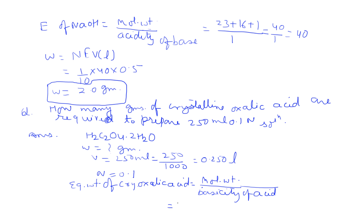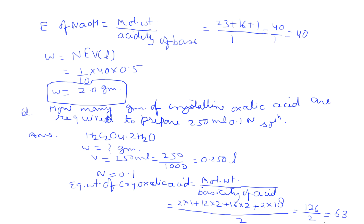Molecular weight of crystalline oxalic acid: (2×1) + (12×2) + (16×4) + (2×18) = 126. Divided by basicity 2 gives equivalent weight = 63. For anhydrous oxalic acid, molecular weight is 90 divided by 2, giving equivalent weight 45. Since this question specifies crystalline oxalic acid, the equivalent weight is 63, not 45.